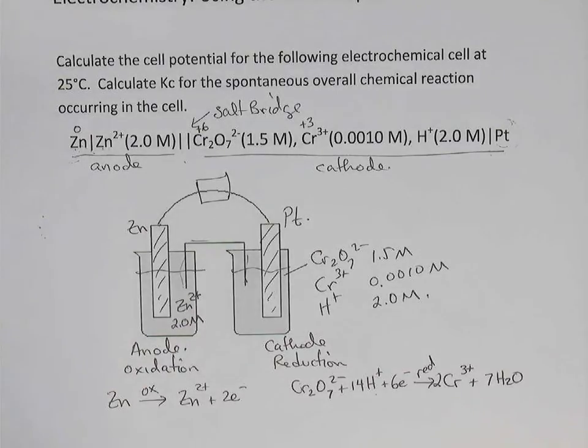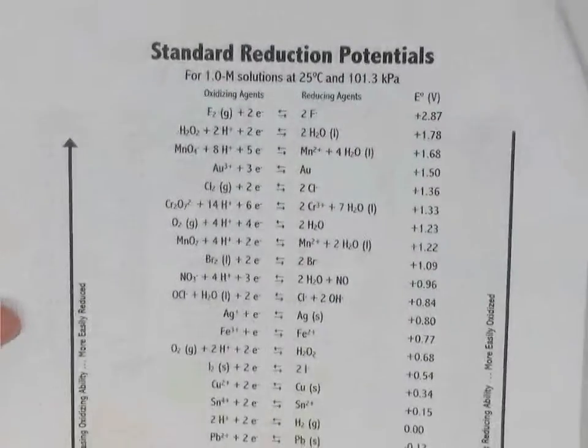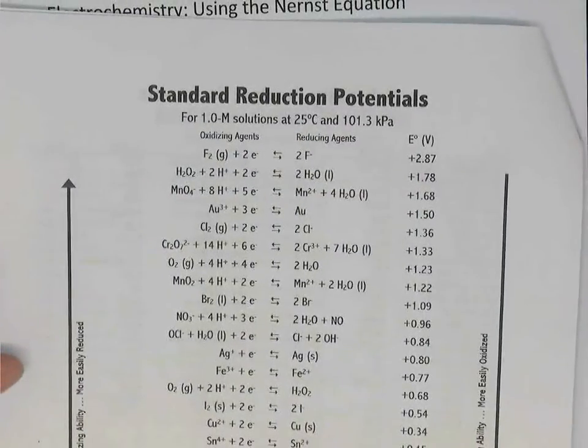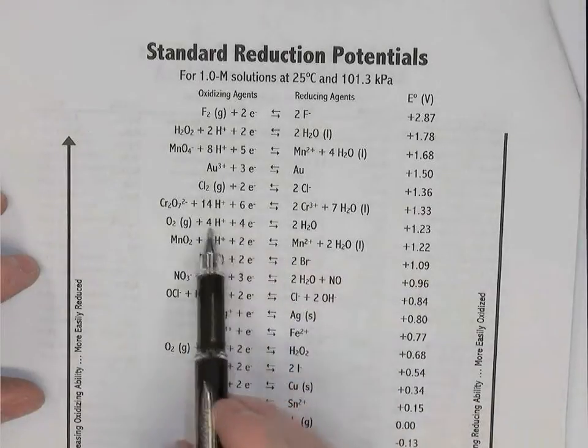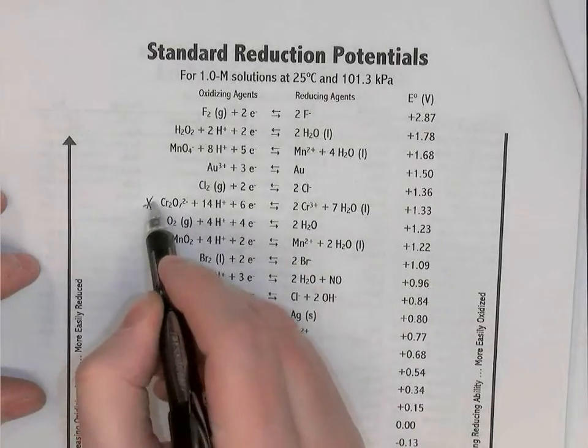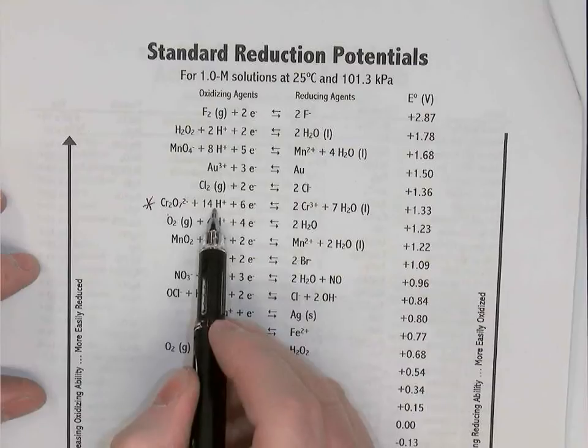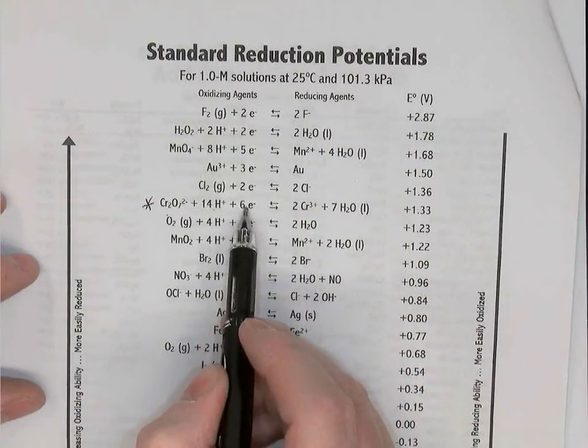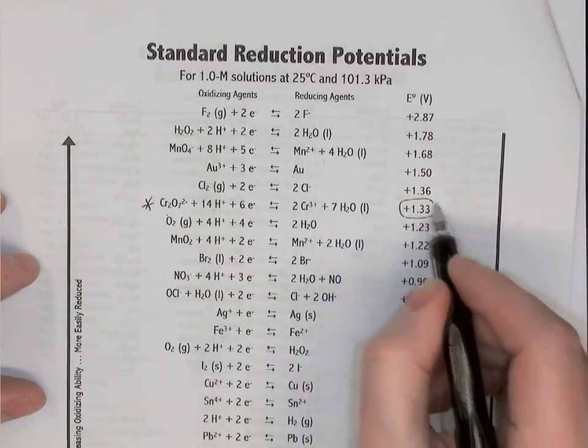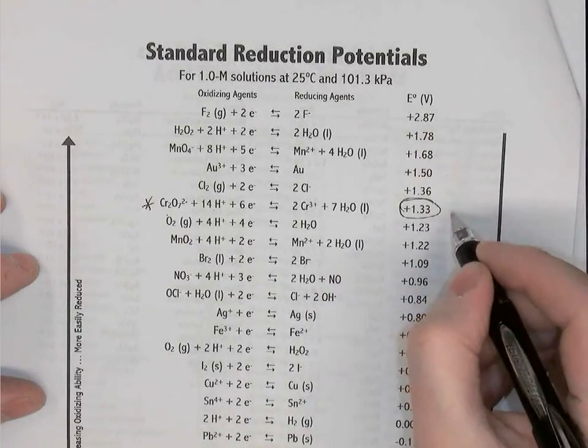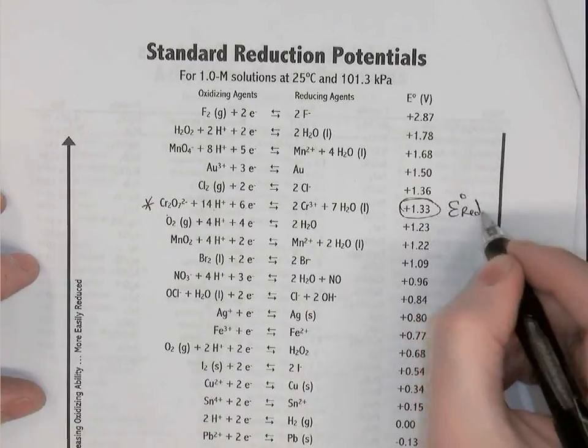Now what I just did relatively quickly, we could have done even faster by looking at a table of reduction potentials like this. We could have simply looked up the dichromate reaction. And here it is here. Dichromate plus 14 hydrogens and 6 electrons becomes 2 chromiums and 7 waters. This number is going to be important. That's its reduction potential. E0 reduction.